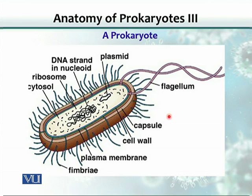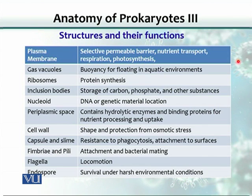In this presentation, we would focus only on glycocalyx and some part would be covered on flagella. Before we talk about various structures, let's go quickly through their functions. The plasma membrane provides a selective barrier, is used for nutrient transport, and also used in respiration and photosynthesis.